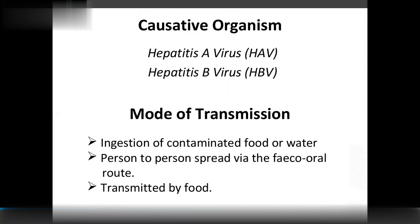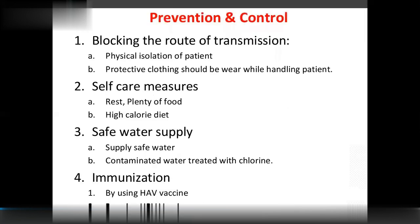Mode of transmission is through infected and contaminated food — mainly orofecal route with contaminated food. Prevention includes blocking the route of transmission, physical isolation of patient, protective clothing while handling the patient, rest and nutritious high-calorie diet, and safe/treated water. Vaccination includes Hepatitis A and Hepatitis B virus vaccines and HBIg.